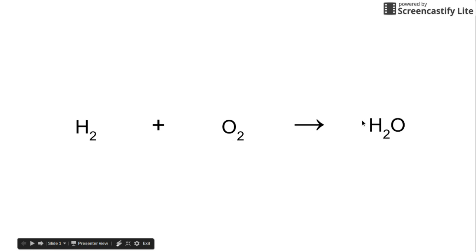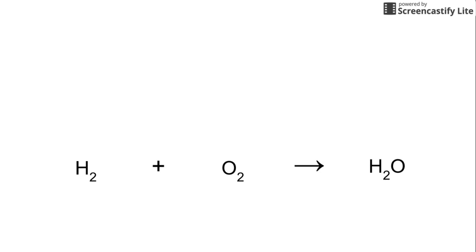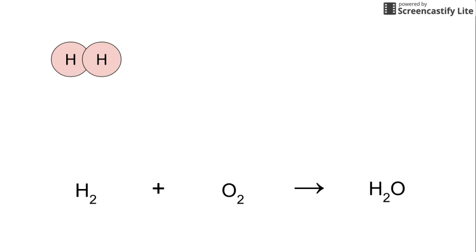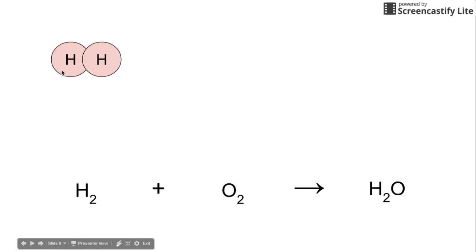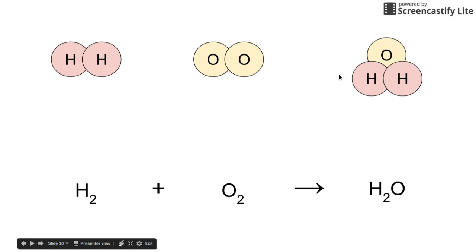If we take this and try to visualize it using molecular models, we've got H₂ — the subscript two means we have two hydrogen atoms — shown here as the two hydrogen atoms in this diatomic molecule. Likewise for oxygen: there are the two oxygen atoms as noted by the subscript two. And finally the product we get on the other side is water, H₂O — two H's and one O.